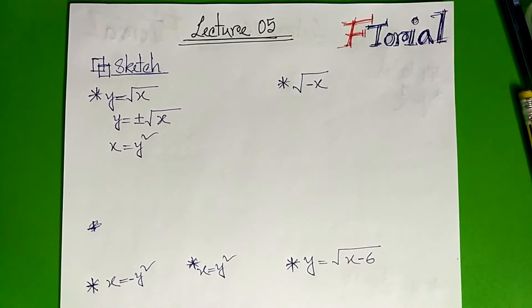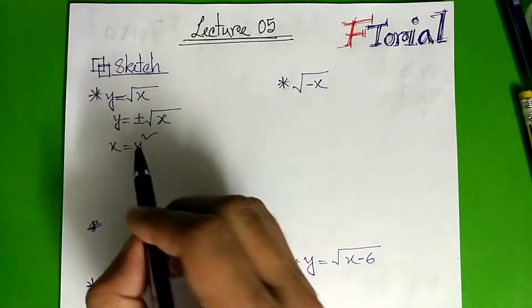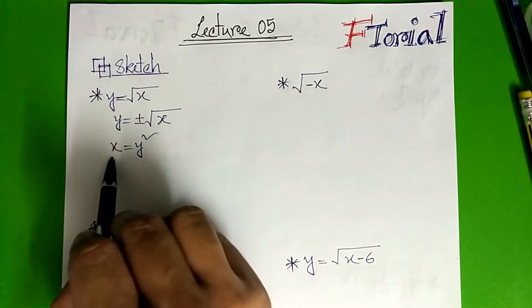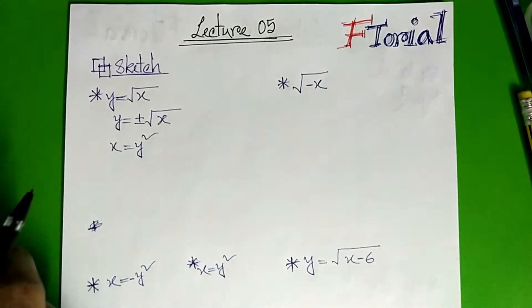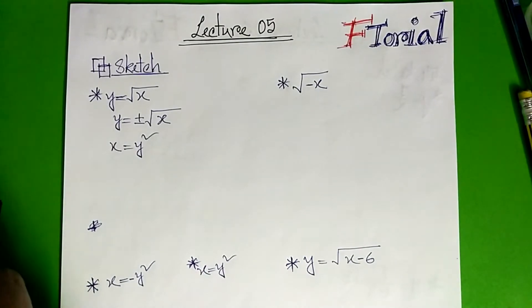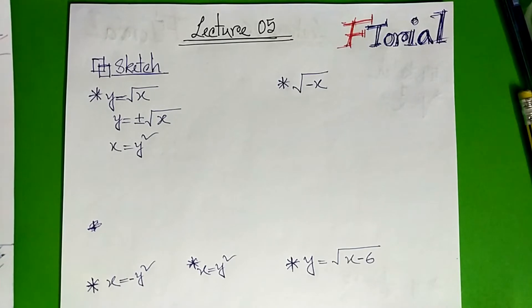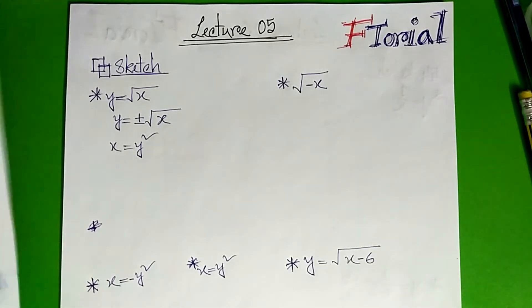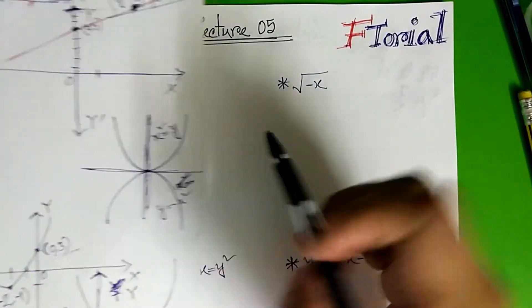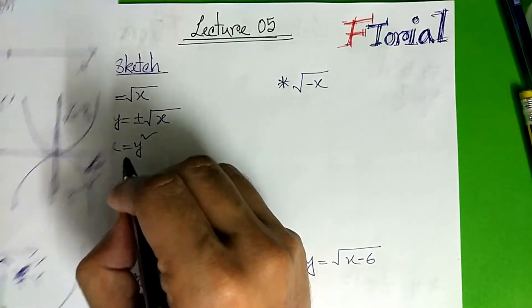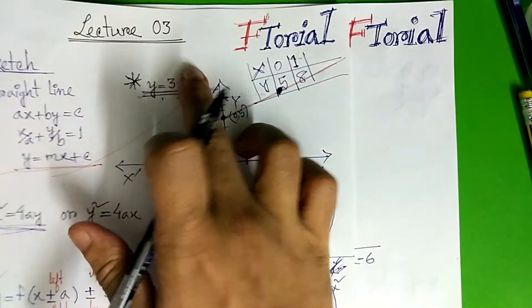Lecture 05. Here I am going to show you how to do this case. X is equal to Y squared. Here we also have X squared.